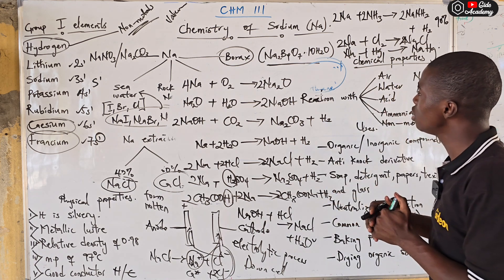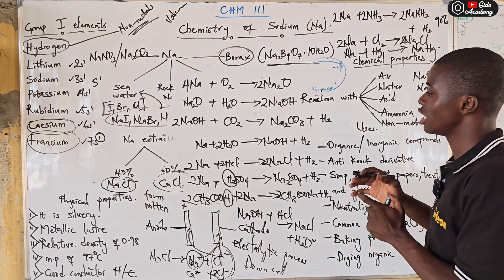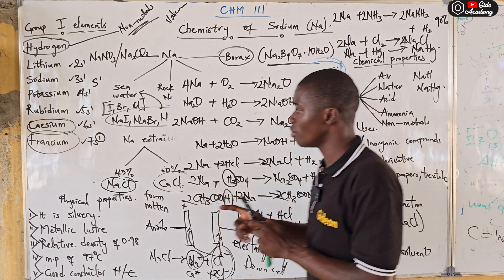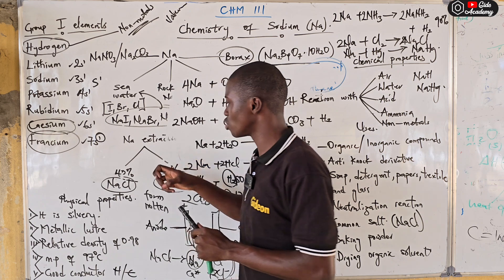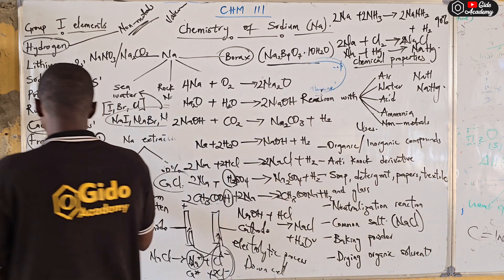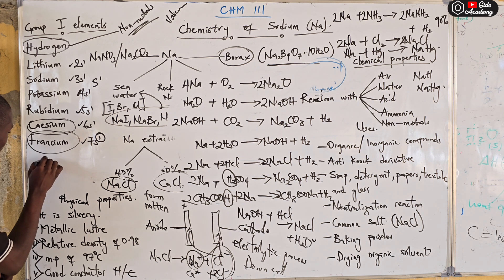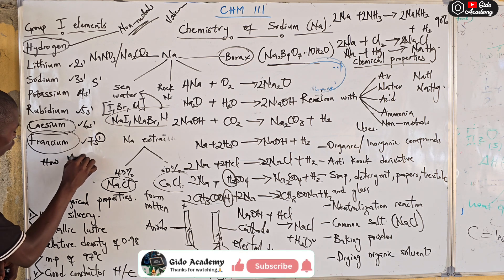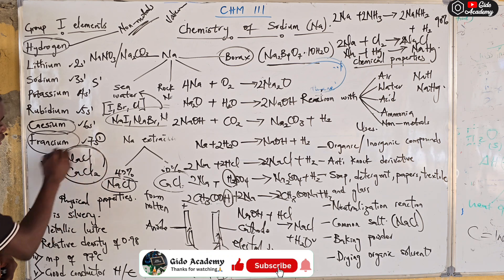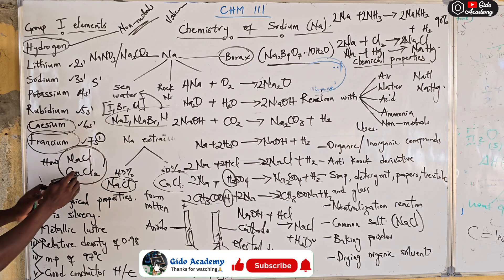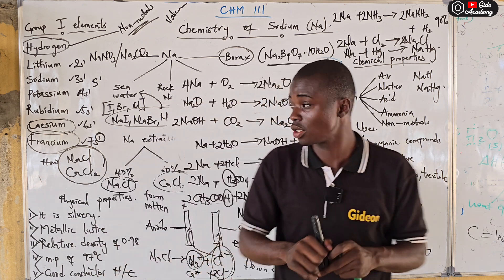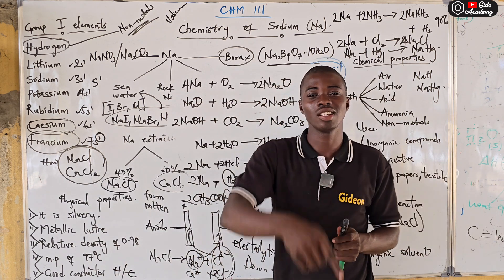That covers about 90% of the chemistry of sodium as an element. If you find any part confusing, please drop a comment and I will attend to it. Here is a question for you: What percentage of sodium chloride and what percentage of calcium chloride is used in the extraction of sodium, and what type of cell is used? Please leave your answers in the comment section. Thanks for watching — see you in the next episode.